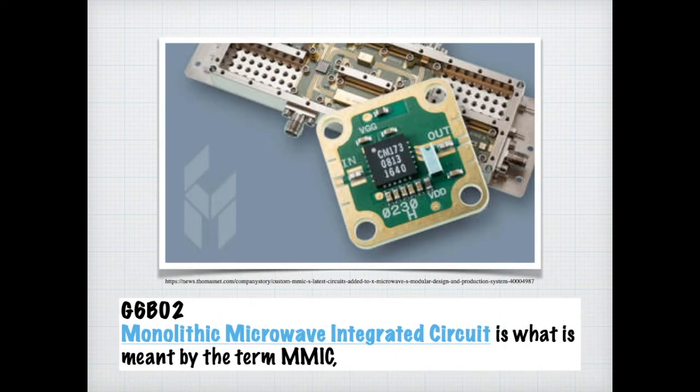For you science fiction fans, do you remember the monolith in 2001? Monolithic means that it's just from a single block. So a monolithic microwave integrated circuit is a circuit that's made from one small flat piece or chip of semiconductor material. For the exam, you just need to know that a monolithic microwave integrated circuit is what is meant by the term MMIC.